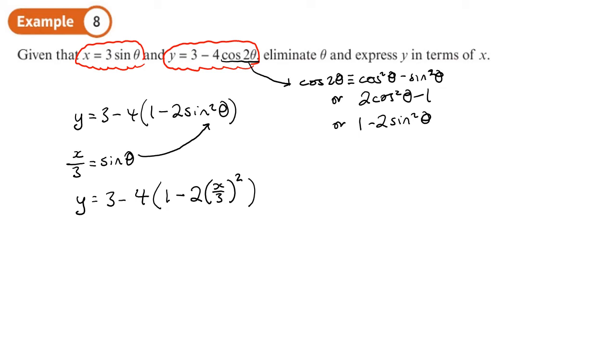But I think it's nice to tidy up a bit. So y equals 3 minus, and we'll expand the brackets, 4 plus 8 times x over 3 all squared. You can tidy that up even more. 3 minus 4 is going to be negative 1 plus, and then we'll have 8x squared over 9. We can leave it like that if we want to, or we could then write y equals 8 over 9 x squared minus 1 as our final answer.